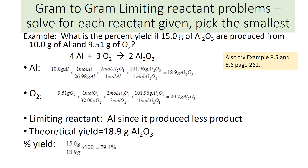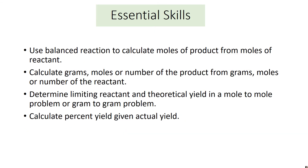Here it is typed out more neatly, along with some other examples to try from the book. Here's what you need to know from chapter eight: use the balanced reaction to calculate moles of product from moles of reactant; calculate grams, moles, or number of product from grams, moles, or number of reactant; determine the limiting reactant and theoretical yield; and calculate percent yield given the actual yield.